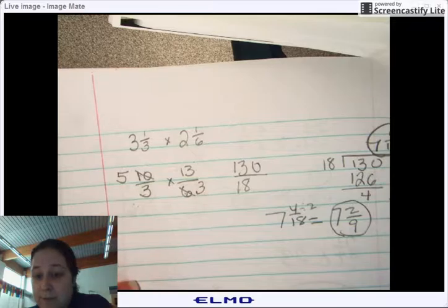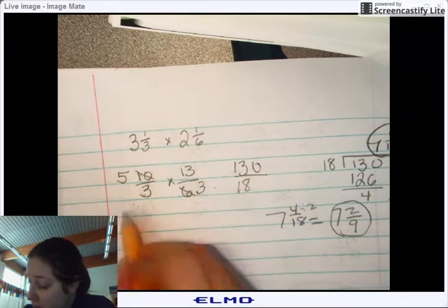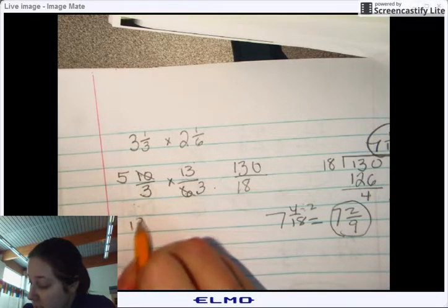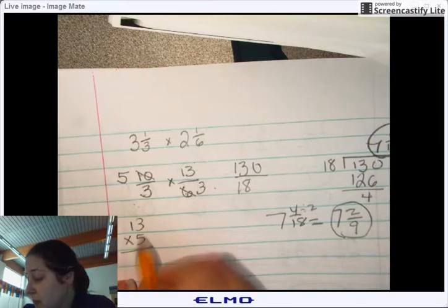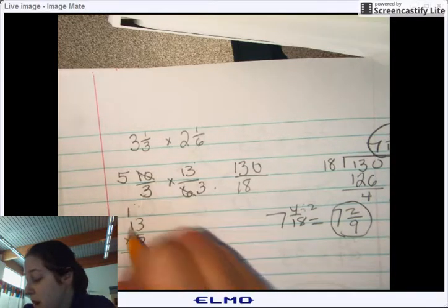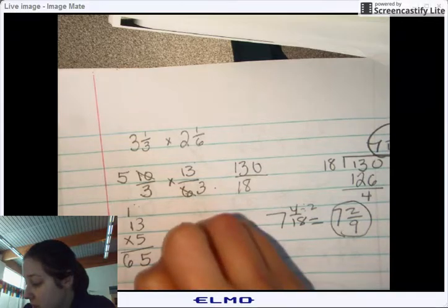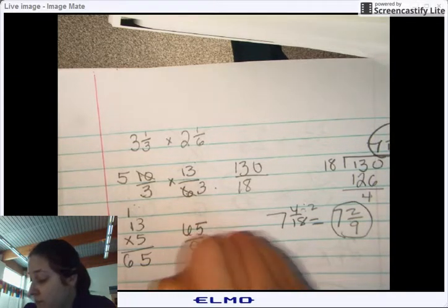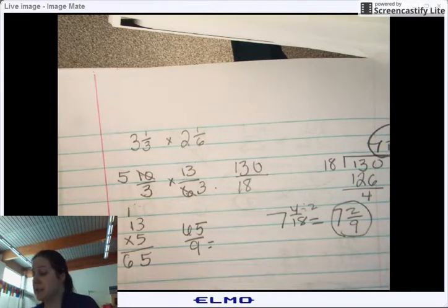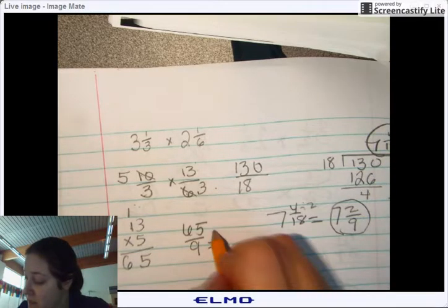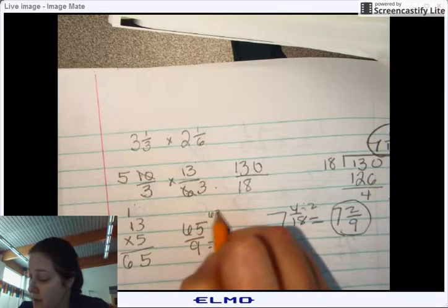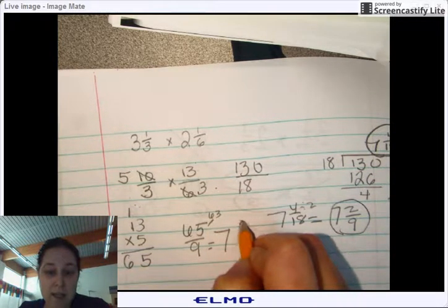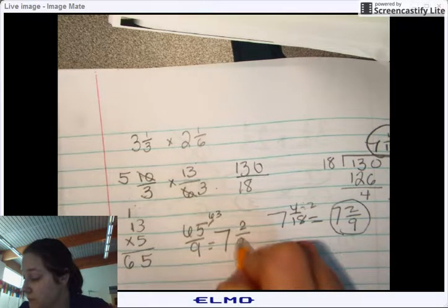Now, when I reduced it, I get 9 over here is my bottom number. I get 13 times 5. 65 over 9. 9 can go into 65 seven times, giving you 63. Subtracting it, you get 2/9. Okay?